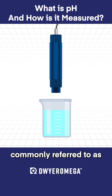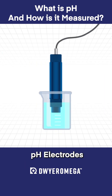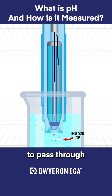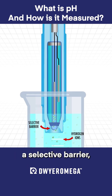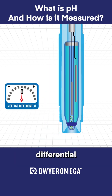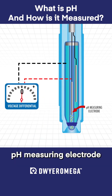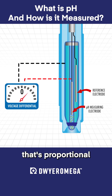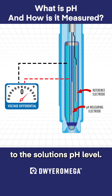pH sensors, commonly referred to as pH electrodes, are designed to allow hydrogen ions in the solution to pass through a selective barrier, generating a measurable voltage differential between the pH-measuring electrode and the reference electrode that's proportional to the solution's pH level.